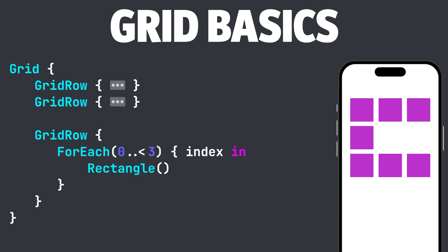The first item in each grid row is the first column. The second item in each grid row is the second column, and so on.